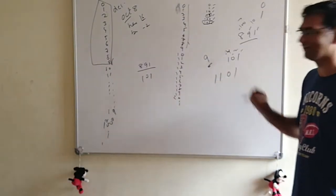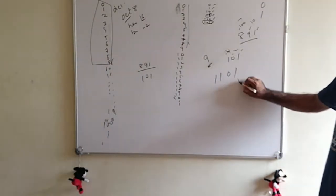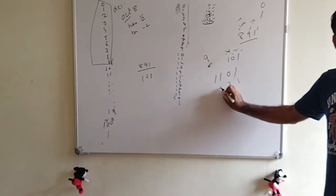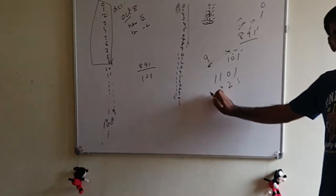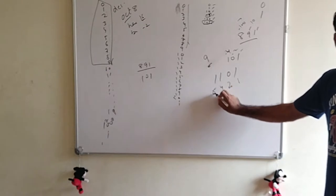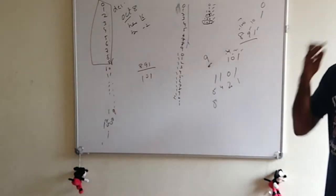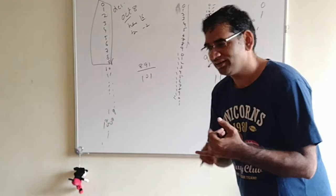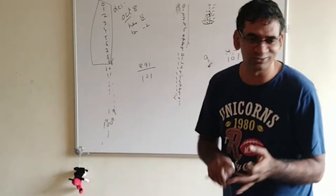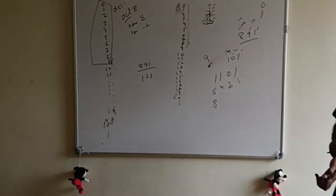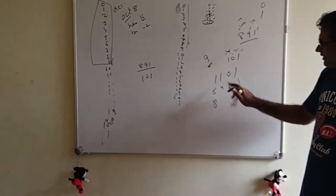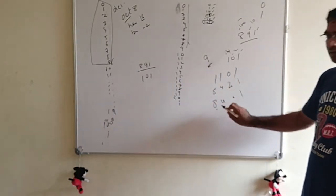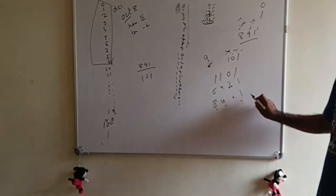Let's say I write binary 1, 1, 0, 1. The first is the unit - one. Multiply by two - zero times two is zero. Multiply by two again, two into two equals four. Multiply by two into two into two equals eight - eight times one is eight. In decimal: units, tens, hundreds, thousands. In binary: one, two, four, eight. So for 1101: eight plus four plus zero plus one equals thirteen.